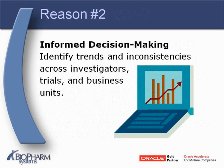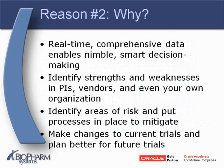Reason number two goes along with reason number three around reporting: informed decision-making. The system should help you identify trends and inconsistencies across investigators, trials, and business units. The basis of all your decisions should be your experience and information on your past and current progress as an organization, and that comes from real-time comprehensive data. You can identify strengths and weaknesses in your investigators, sites, vendors, and even internal resources. Through that analysis, you can identify areas of risk and put processes in place to reduce or eliminate that risk, and through real-time analysis you can change the course for studies in progress or plan better for future trials.